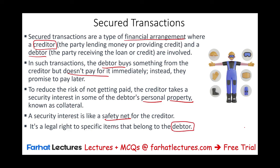The debtor has items — a car, a computer, a phone, jewelry, whatever they have — and they're giving the creditor the right to those items in case they don't pay. This is what we'll be discussing in this session.